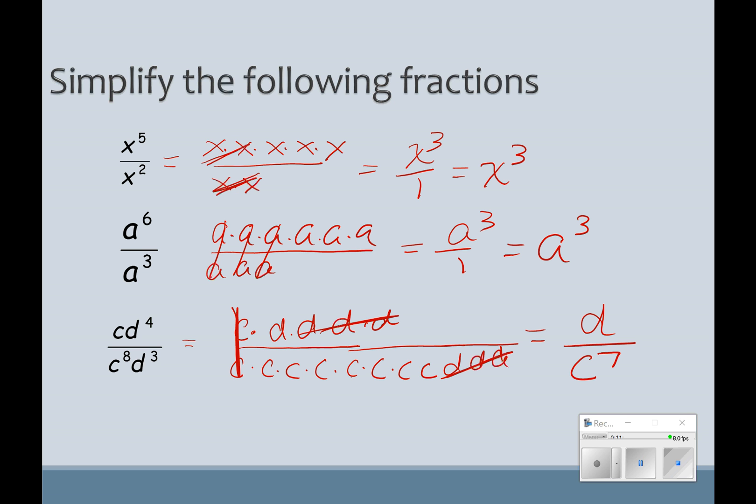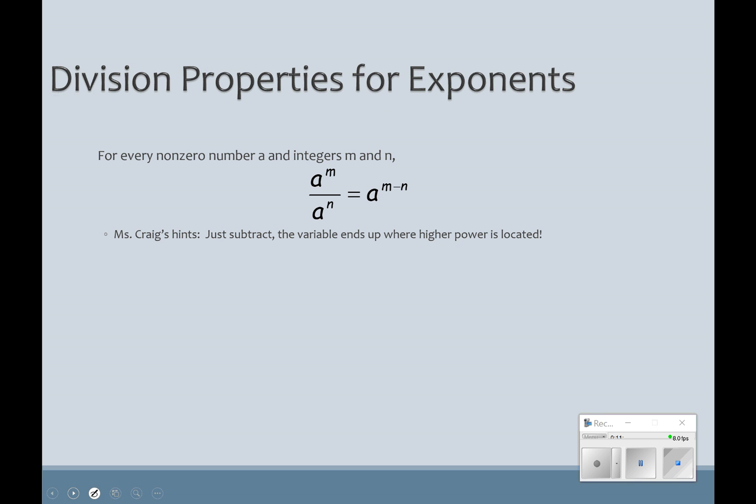So now, with the c, I've got a c, I've got 4 d's, and I've got 8 c's and 3 d's. So I'm going to cancel out the things that I have in common. These c's are going to cancel out. I've got 4 d's on top, 3 on the bottom. So 3 on the bottom and 3 on the top are going to be canceled out. And I'm left with 1 d over 7 c's. So d over c to the 7th. Now, what I hope you're noticing is we're doing some subtracting. And that's what we're doing. When we divide, we're going to subtract. Remember, when we multiplied, we added. When we divide, we subtract.